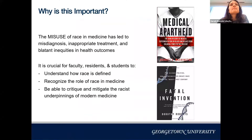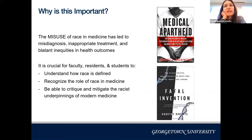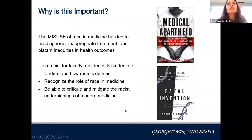The misuse of race in medicine has led to misdiagnoses, inappropriate treatments, and blatant inequities in health outcomes. That's why it's so important for faculty, residents, and medical students to understand how race is defined, recognize the role of race in medicine, and be able to mitigate it. On the side are two books I highly recommend — Medical Apartheid and Fatal Invention, which is now required reading for incoming M1 students.